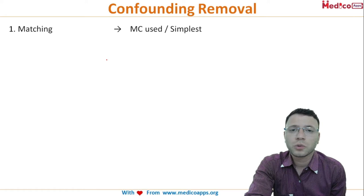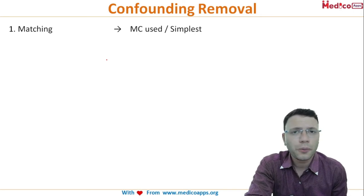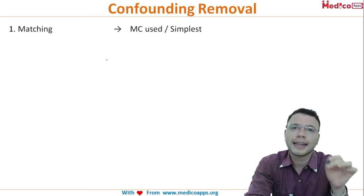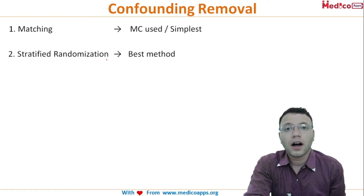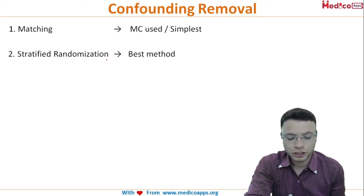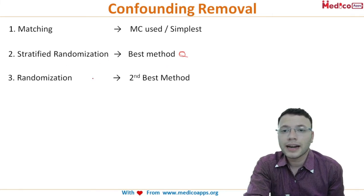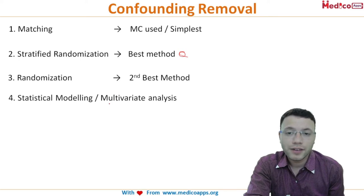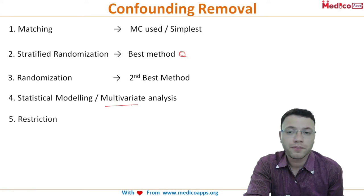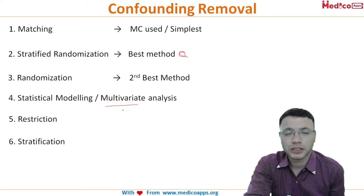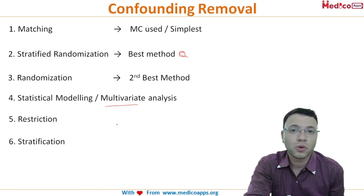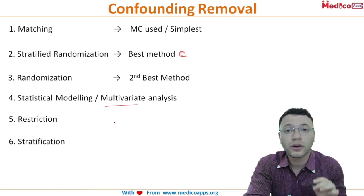The most common and simplest method to remove confounding is matching — you match demographics like age, sex, or occupation across both groups. Other methods include stratified randomization (the best method), simple randomization (second best), multivariate analysis or statistical modeling, restriction, and stratification. These six methods reduce confounding, which is more commonly encountered in cohort studies.